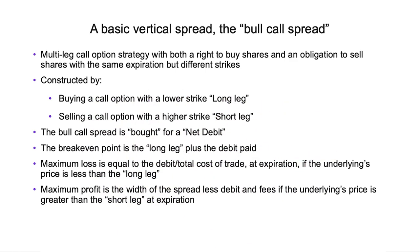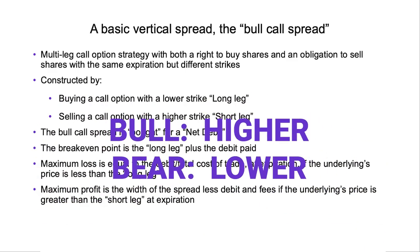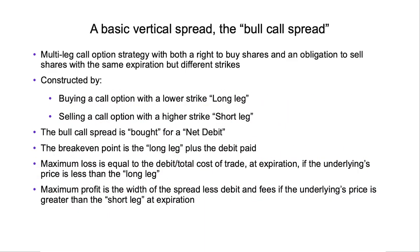Let's break it down. Bull means that we believe something is going to be moving higher. We're going to be using a call option — we're going to both buy a call option, which gives us the right to do something, and we're going to sell a call option, which gives us an obligation to do something. It's a multi-leg call option strategy, with both a right to buy shares and an obligation to sell shares.